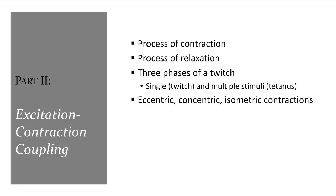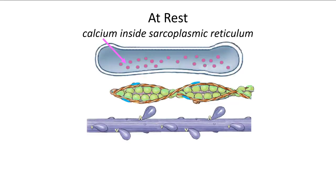Now, with all of those things learned, we'll put it together in the process of contraction and relaxation, as well as going through the phases of a twitch and types of muscle contractions. In this schematic, the sarcoplasmic reticulum can be seen with calcium as pink dots inside.